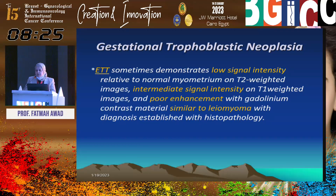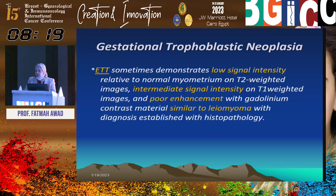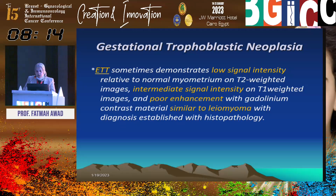Epithelioid trophoblastic tumors are similar to leiomyomas on MRI — intermediate signal intensity on T1, low signal intensity on T2-weighted images, and with poor contrast enhancement.